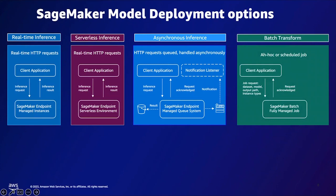Lastly, we have batch transform. These are offline use cases when you don't want responses in real-time — use cases such as nightly customer scoring, propensity models, or churn prediction analysis. You can place your inputs into an S3 bucket, have this processing job run for you, and dump the results back into an S3 bucket. Each option has different performance and cost considerations that can help you optimize in your environment.